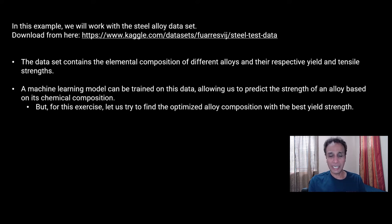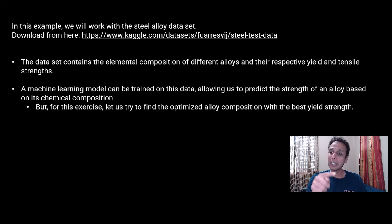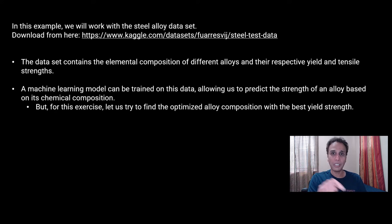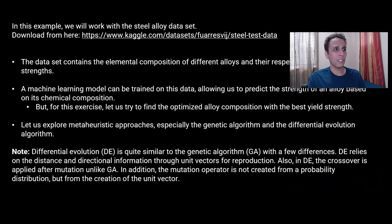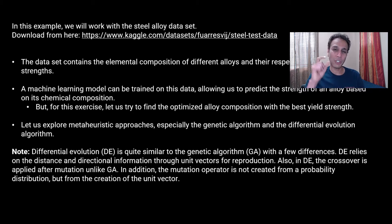Optimization is exactly the opposite of prediction: for a given function — which could be a machine learning model — what is the right combination of values that gives the best yield strength? That function is there to quantify the fitness, and that's what we are trying to do. We are going to use meta-heuristic approaches; genetic algorithm is one of them, and another is called differential evolution. I'll show you a few lines of code for both. In GA the mutation is done after crossover; in differential evolution it's done before crossover, but the thought process is very similar.